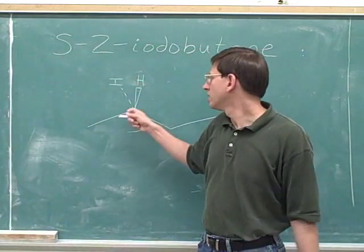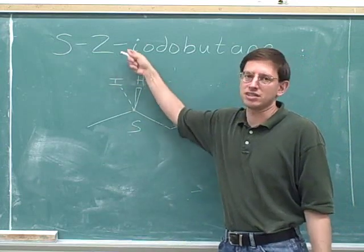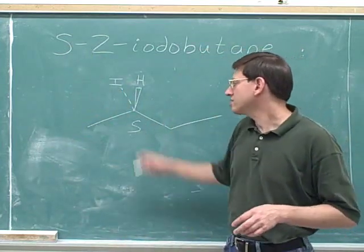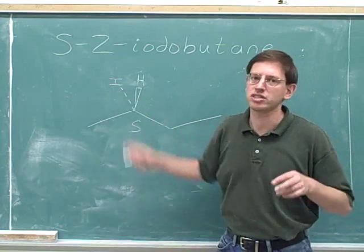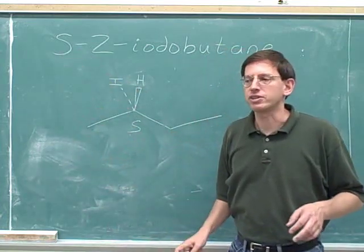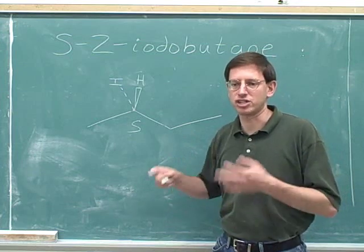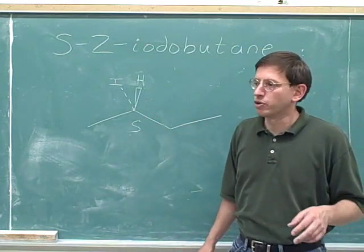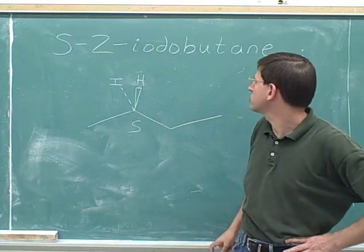So now we're done, and we've accurately drawn what the stereocenter looks like. The basis of this method is: don't try to figure out in your head what the S configuration looks like — just take a guess, preferably one that puts the number four priority on the dash, since that's the easiest to evaluate. After you make a guess, check it. If it turned out wrong, just make any single swap and you'll have something that matches the name. Also, there are many different ways of drawing an S stereocenter, so don't worry if your picture doesn't look like mine.